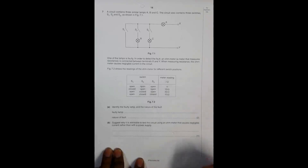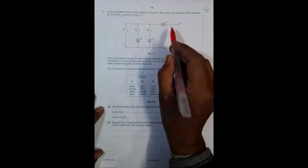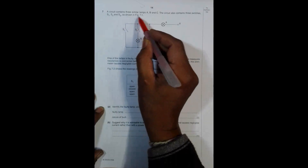Hello folks, this is question 7 from the 2006 May/June Paper 2, concerned with the chapter of electricity. It says that a circuit contains three similar lamps A, B and C, and also contains three switches S1, S2, S3 as shown in figure 7.1.